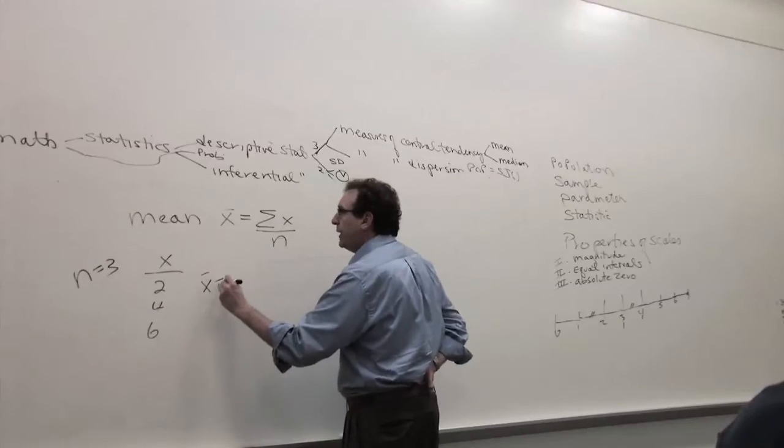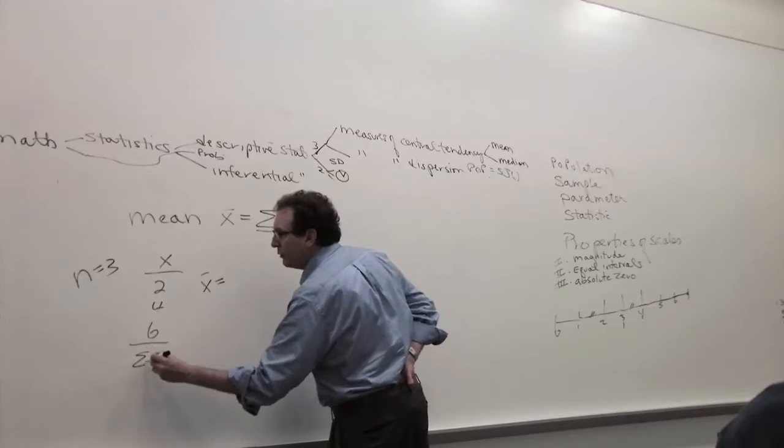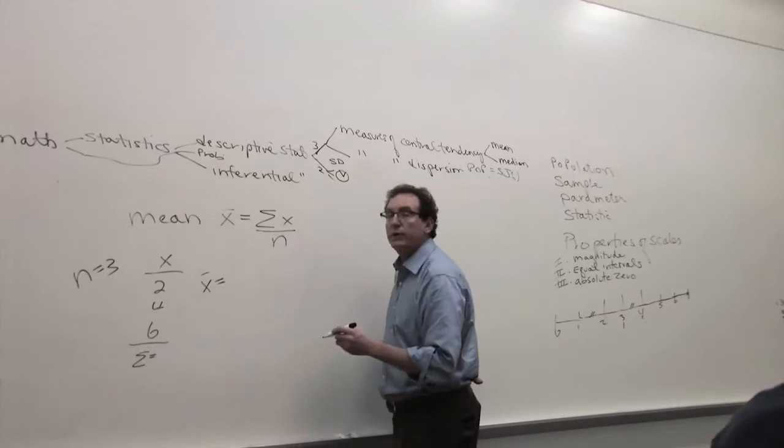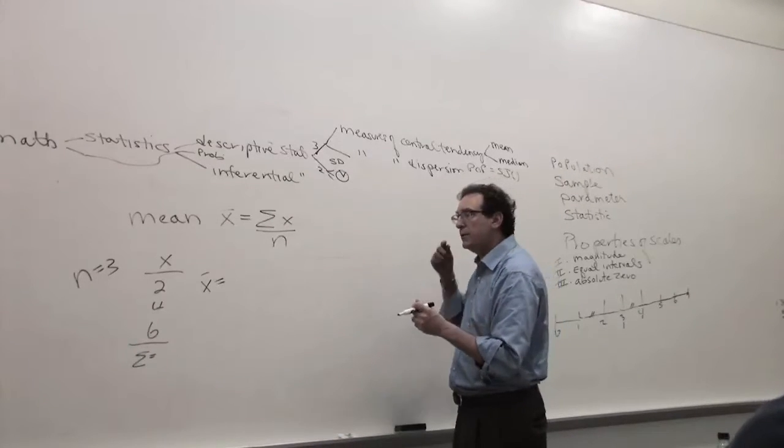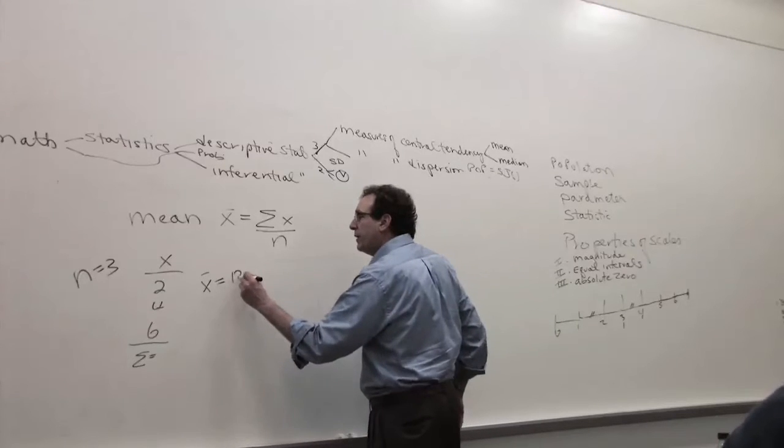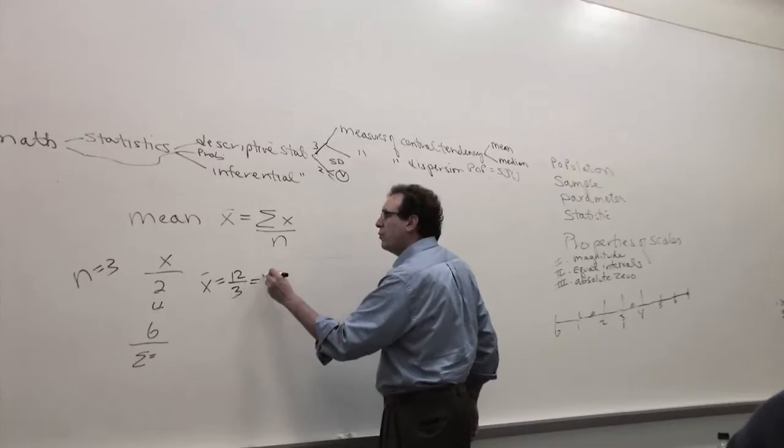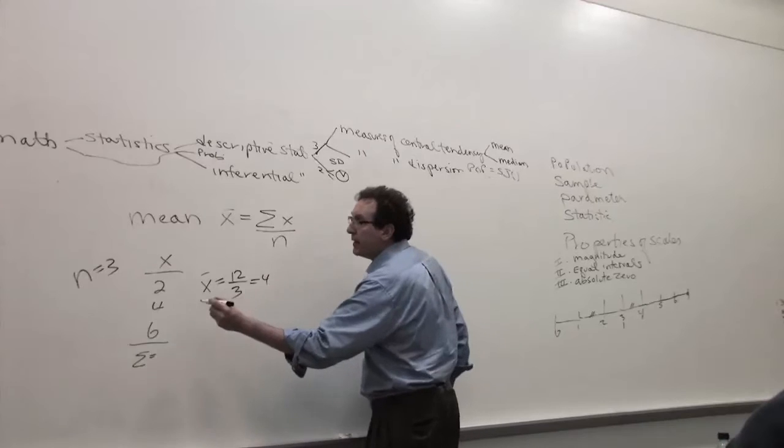So the average is, you add them all together, the sum, this capital sigma refers to the sum of a bunch of data. The sum is equal to 12, so 12 divided by the sample size 3 is equal to 4. In this case, the average happened to come out exactly the middle number.